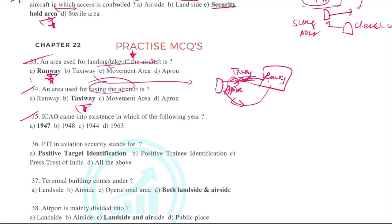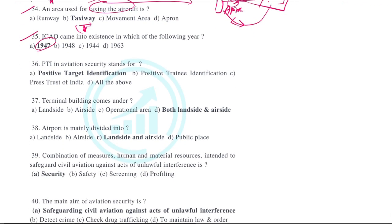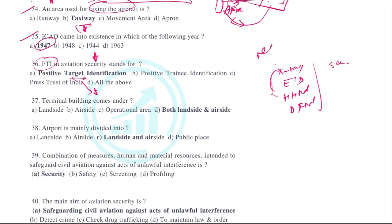ICAO came into existence in 1947. PTI in aviation security stands for Positive Target Identification. Equipment like X-ray, ETD, HHMD, and DFMD are used to identify the presence of metals, explosives, and narcotics — these are the positive targets. PTI means we are searching for these materials: metals, explosives, and narcotics.